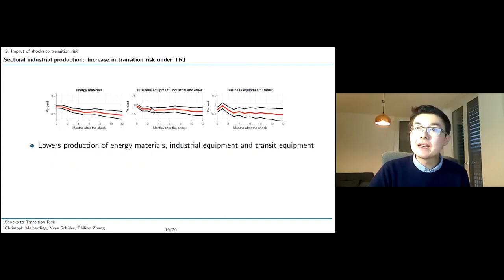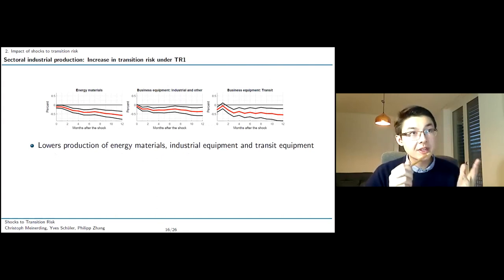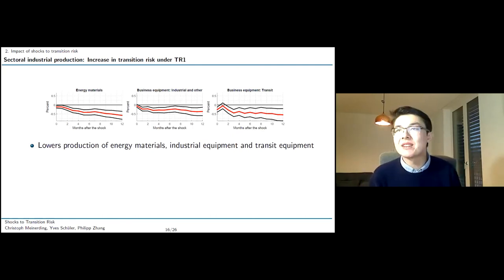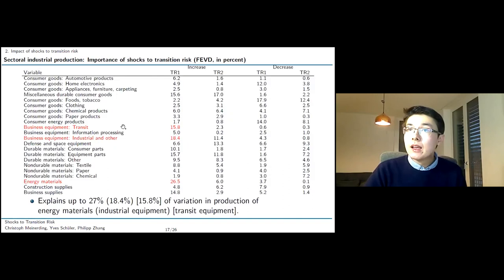In a second exercise, we replace aggregate industrial production for the U.S. with more granular sectoral industrial production. We plug in time series for 22 sectoral industrial productions. Here on the slide, we show the three most interesting and most significant effects. We see that an increase in transition risk under the TR1 scheme leads to a significant decrease in industrial production for energy materials, as well as business equipment industrial and other, and business equipment transit. In a sense, these are somewhat reassuring results, again, in the sense that it confirms that what we are measuring goes in the right direction.